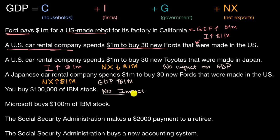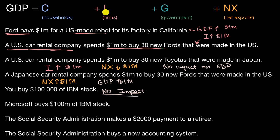I really want to emphasize that. Investment is sometimes associated with buying stocks, but investment in the GDP sense is when a firm is buying some type of capital that will give it future benefit and help it produce more. Oftentimes it's physical capital, but more and more it includes things like software or some type of intellectual capital.